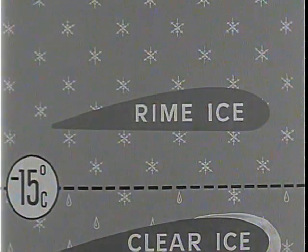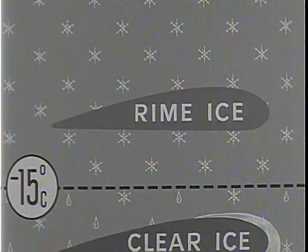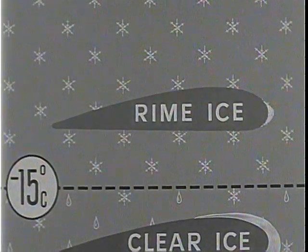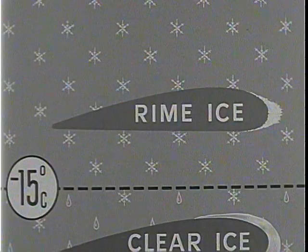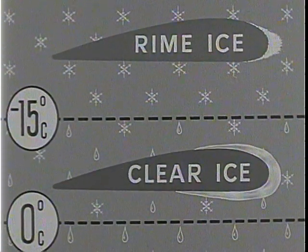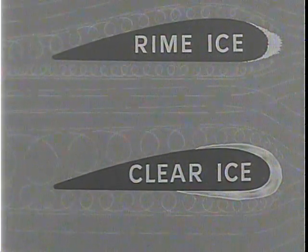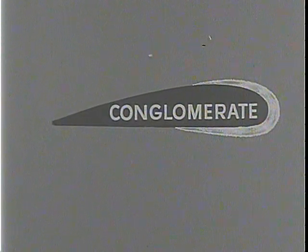Rime ice is somewhat less dangerous than clear ice, since it accumulates more slowly and is easier to dislodge. It forms at lower temperatures, where the water droplets are smaller and less numerous. Each droplet that strikes the aircraft freezes before another strikes on top of it. The resulting accumulation will be in the form of tiny pellets frozen together in a spongy mass. Rime ice usually forms a sharp, protruding ridge, which does not affect the flow of air as extremely as a clear ice formation does. Very often, the ice that forms will be a combination of rime and clear — an irregular conglomerate forming a rough, blunt mass which can build up to serious proportions.